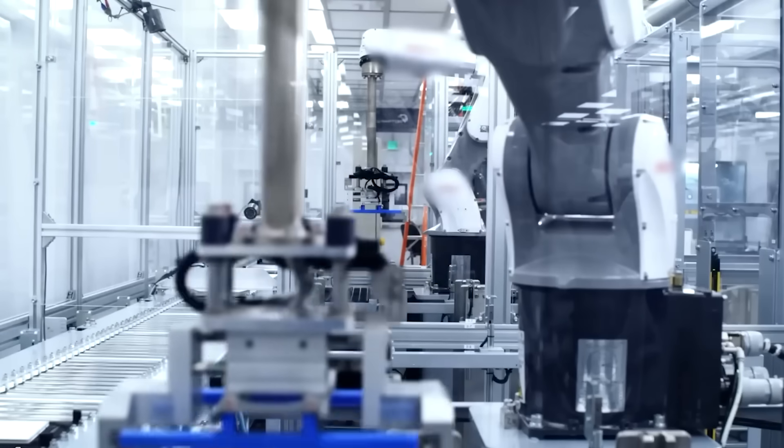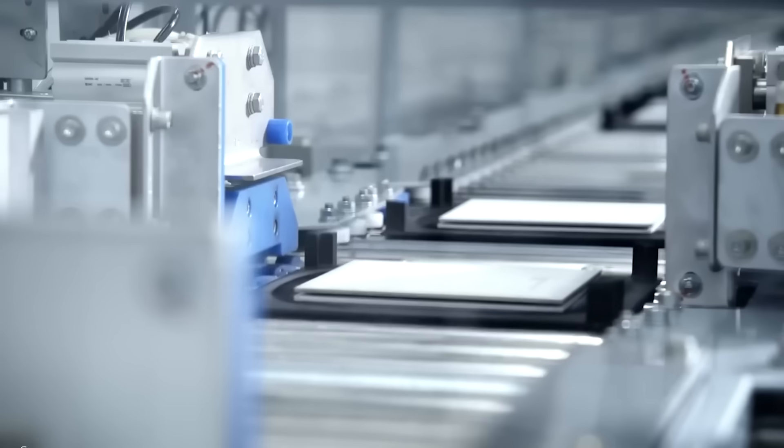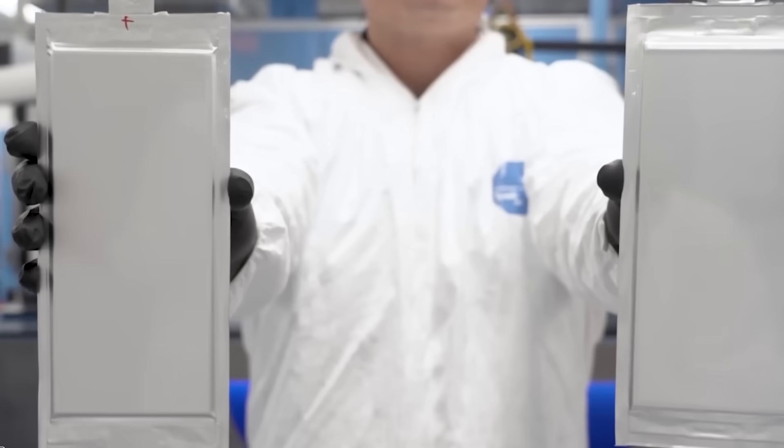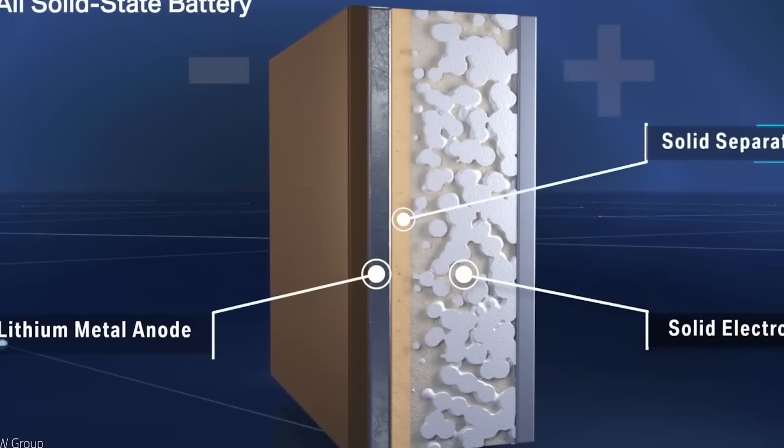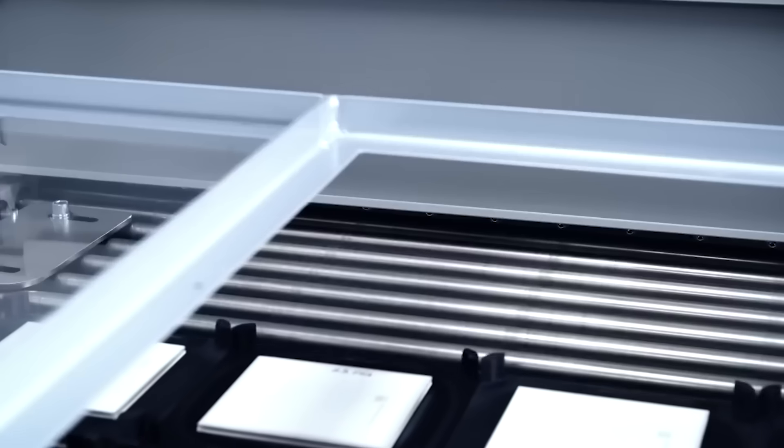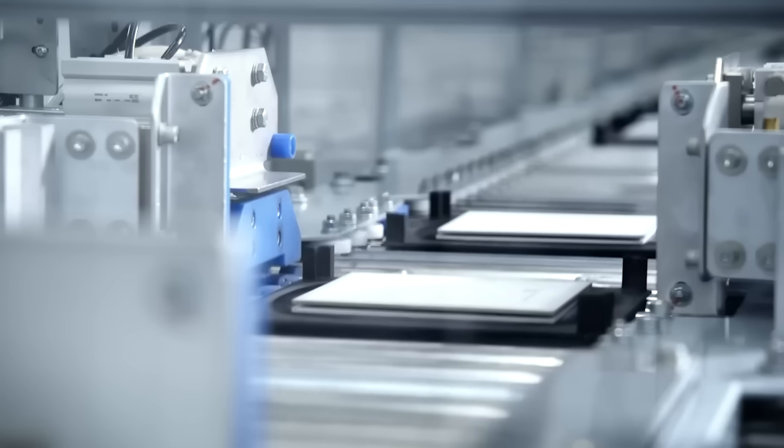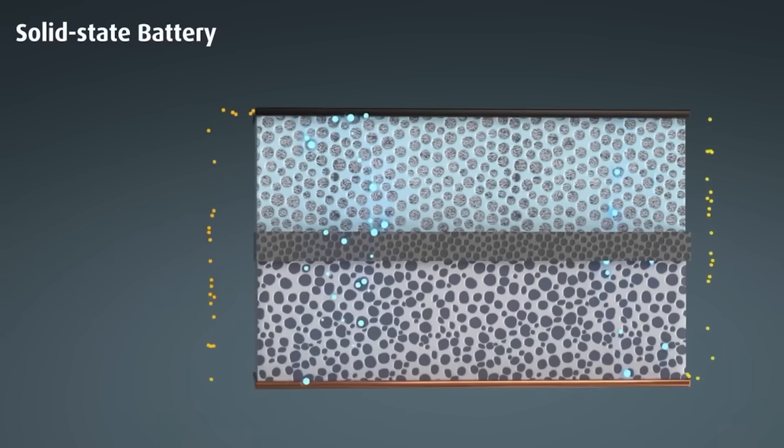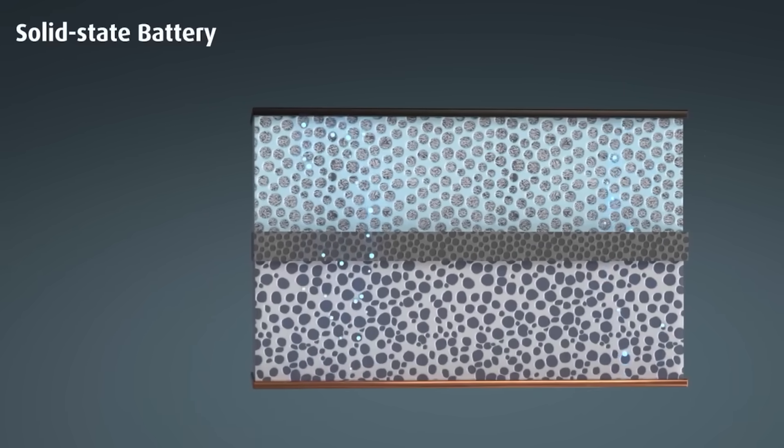Even simple contact is hard. Liquid electrolytes flow and keep touching the electrodes. Solids can crack, shift, or leave tiny gaps as the cell expands and contracts. Those gaps raise resistance and speed up aging. So companies add pressing steps or composite layers to keep everything tight.